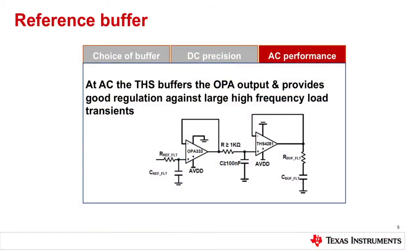From an AC standpoint, you open the capacitors and your circuit changes accordingly. The THS4281 buffer dominates at AC, so the OPA333 output provides good regulation against large high-frequency transients, and you get the benefit of the AC performance from the THS4281. That's the simple way of looking at it.